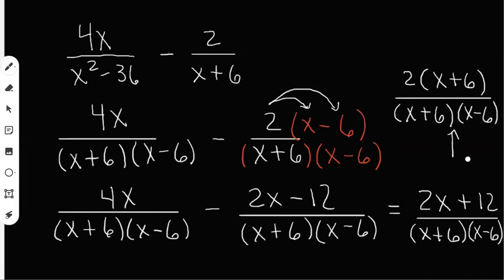So now, what matches up on the top and the bottom? It's going to be the x plus 6. So I can cross those out. And my answer is now 2 over x minus 6.